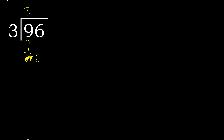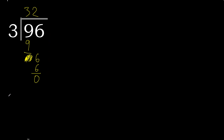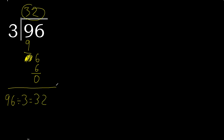6. 3 multiplied by which number? 3 multiplied by 2 is 6. 6 minus 6 is 0 — that is not a remainder, therefore finish. 96 divided by 3 is 32. Finish.